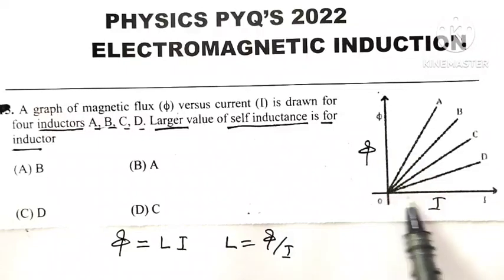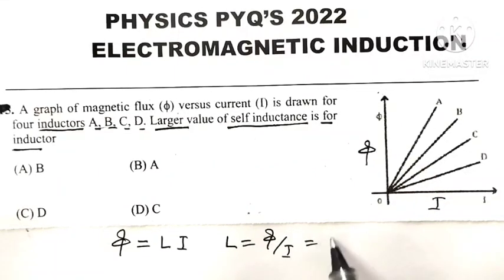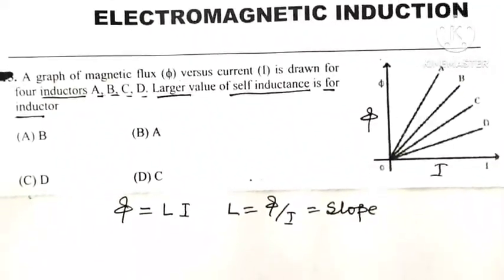Phi is taken on y-axis, I is taken on x-axis, means phi divided by I is nothing but slope.